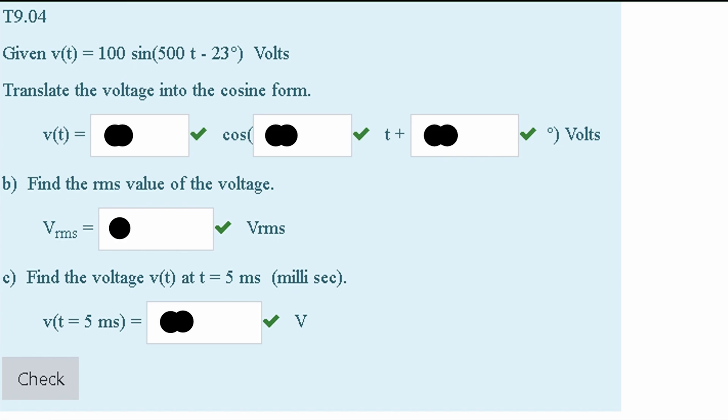Well, we know that the first part, this 100, is our V max. We know that this number in front of our T is our omega, and we know that this value right here is going to be our phase angle.